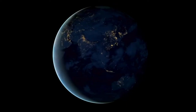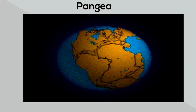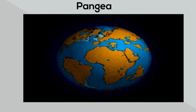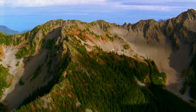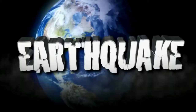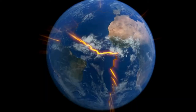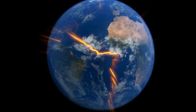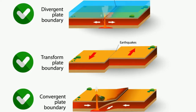Welcome to Moo Moo Math and Science and Plate Boundaries. Some of the most dramatic changes in the Earth's crust, like mountain ranges, new islands, or earthquakes, occur along plate boundaries. There are three types of plate boundaries: divergent boundaries, convergent boundaries, and transform boundaries.